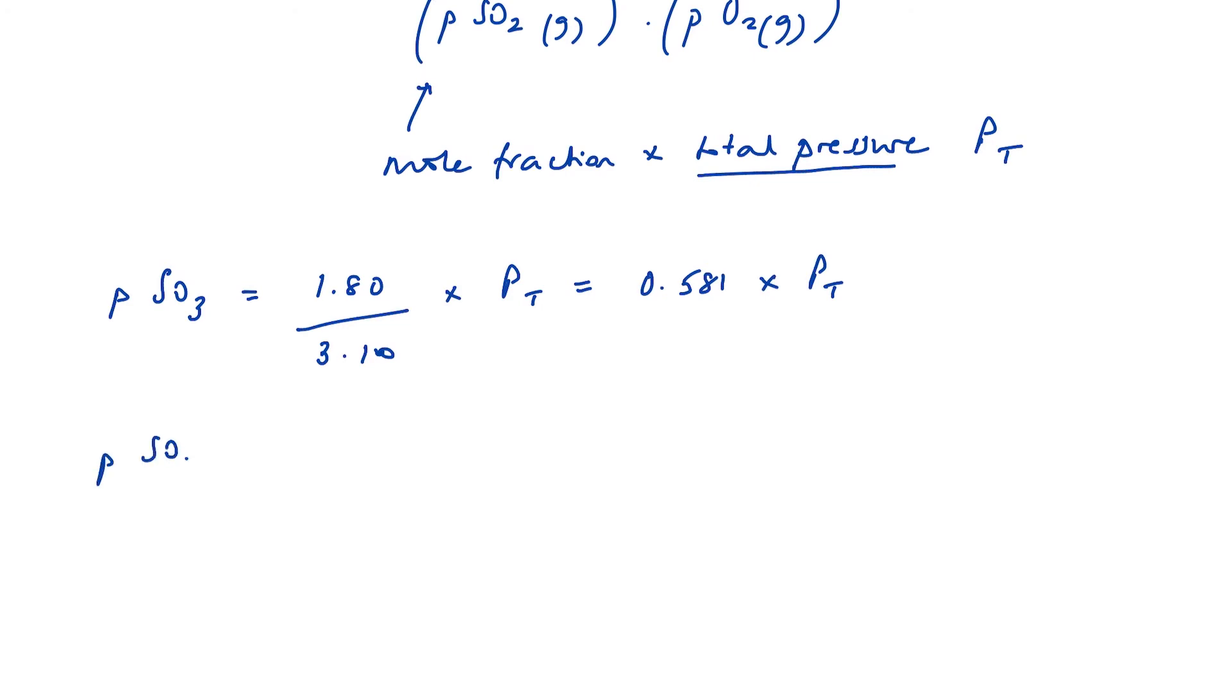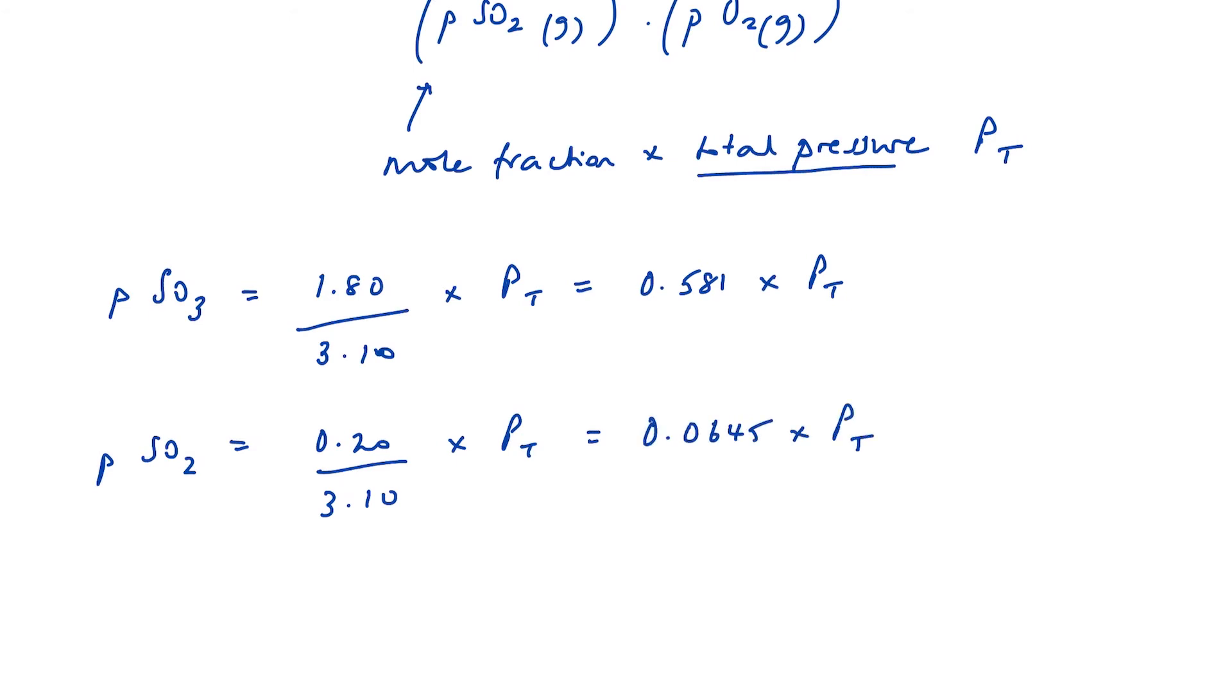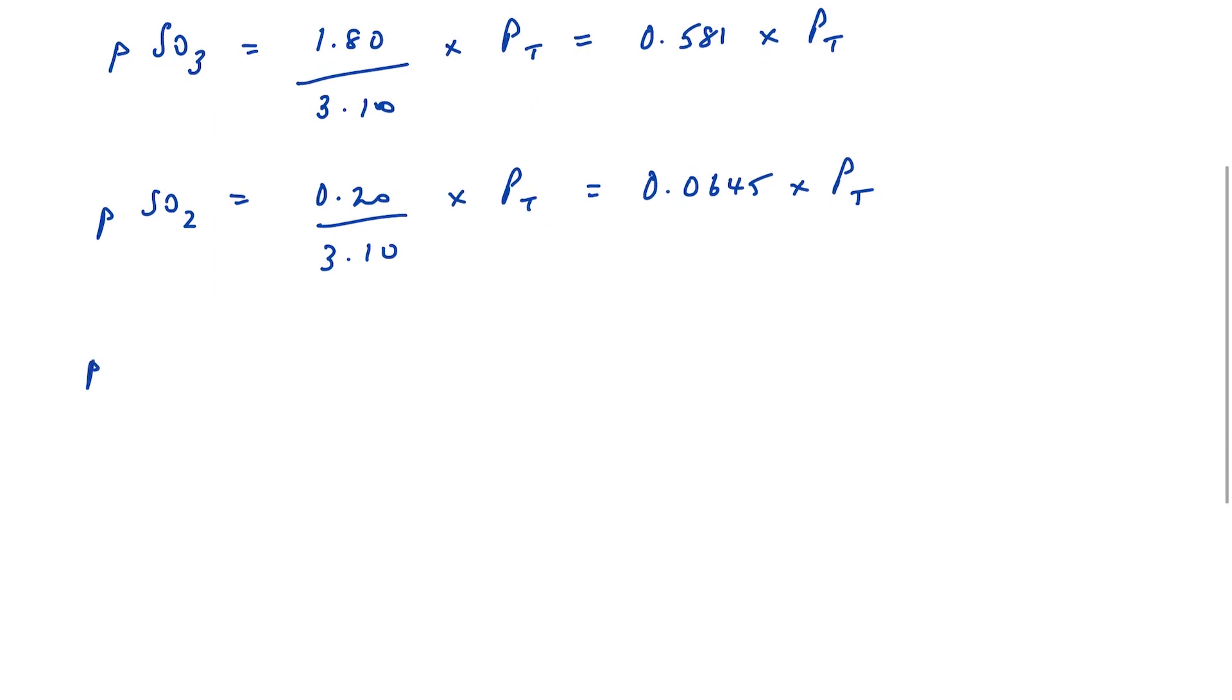Similarly, for sulphur dioxide, 0.20 over 3.1 times total pressure, which comes to 0.0645 times Pt. And for oxygen, we have got 1.10 over 3.10 multiplied by the total pressure, which is equal to 0.355 times Pt.